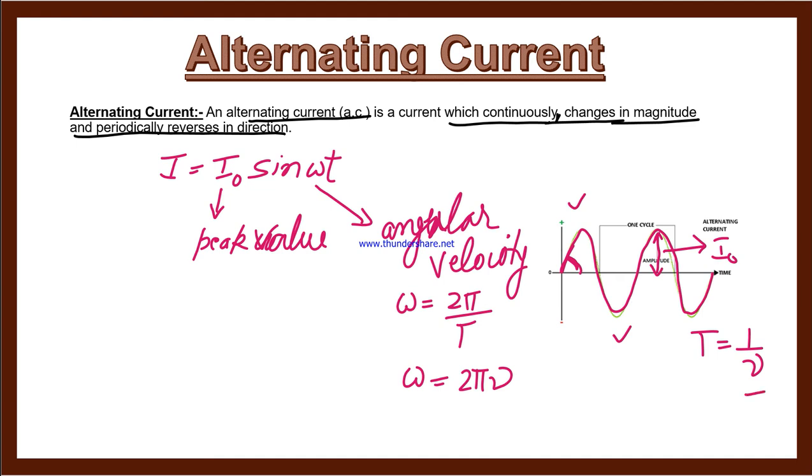The instantaneous value of voltage you can find, which is v equals v0 sine omega t. This is current and this is voltage. v0 is the maximum value or peak value or amplitude of voltage.